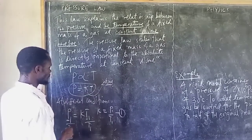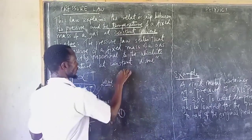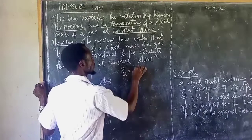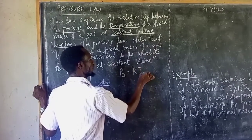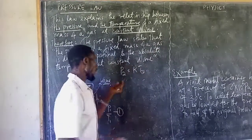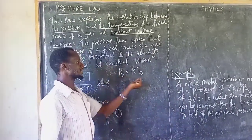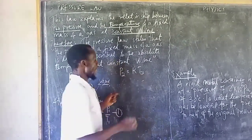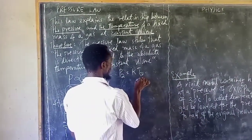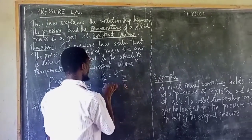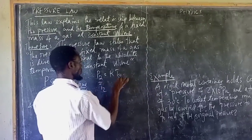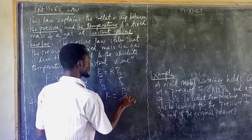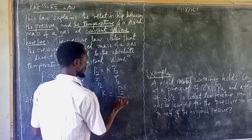What if pressure is changing and becomes P2? P2 is equal to KT2, meaning once the pressure changes, the temperature will also change. Solving for K by dividing by T2, K is also equal to P2 over T2. This is the second equation.